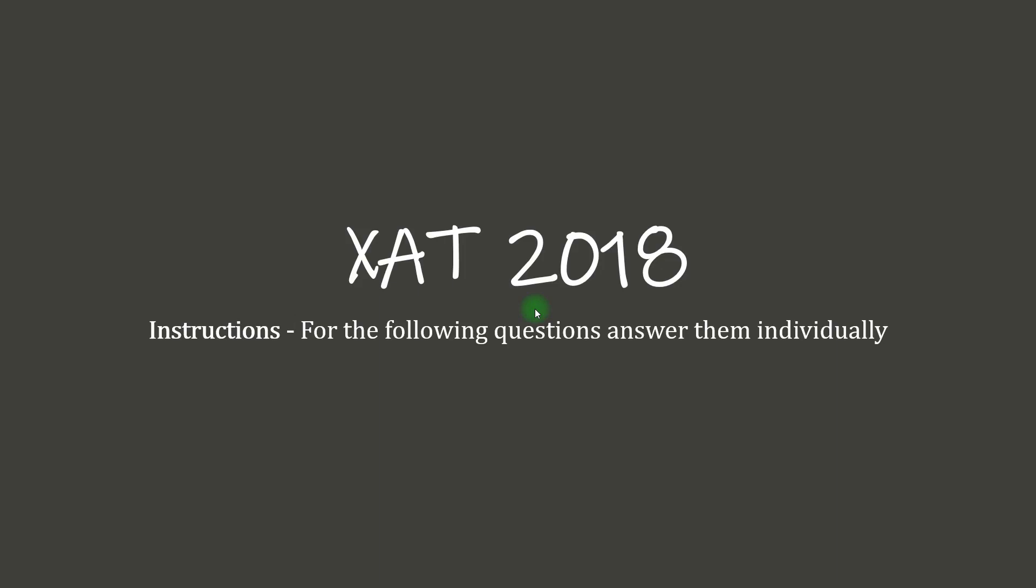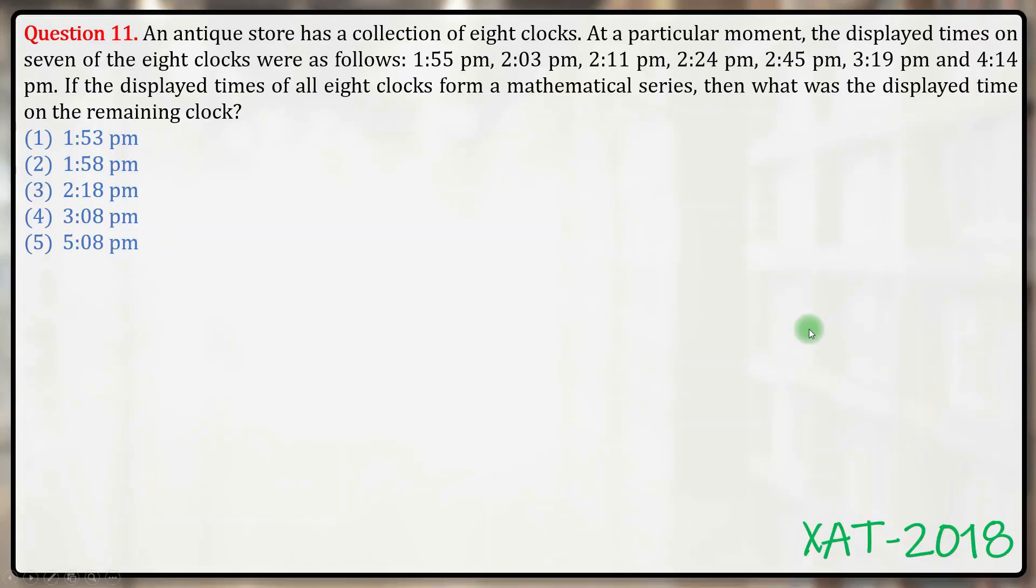Hello everyone, let's get on with this question from XAT 2018. An antique store has a collection of eight clocks. At a particular moment, the displayed times on seven of the eight clocks were as follows: 1:55, 2:03, 2:11, 2:24, 2:45, 3:19, and 4:14 PM.